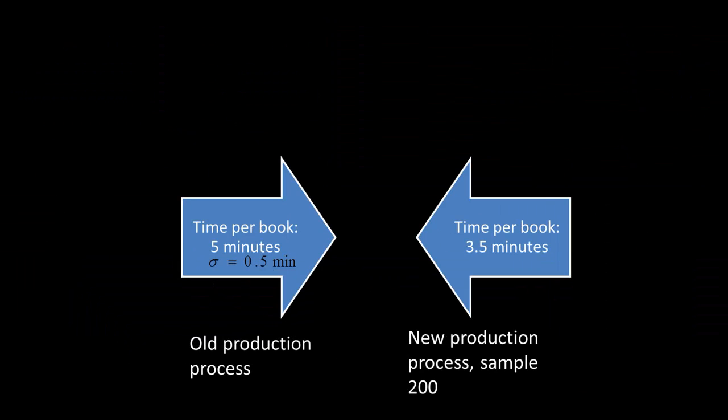How exactly is this useful? Let's go back to the book example. Earlier, the time per book was 5 minutes with a standard deviation of 0.5 minutes before the new process. Now the new production process shows a sample mean of 3.5 minutes based on a sample of 200. The question we can ask is: what is the chance of observing this sample if nothing has changed — if the distribution still has a mean of 5 minutes? If the new process had no impact and the average is still 5, what is the probability of seeing a sample mean of 3.5?